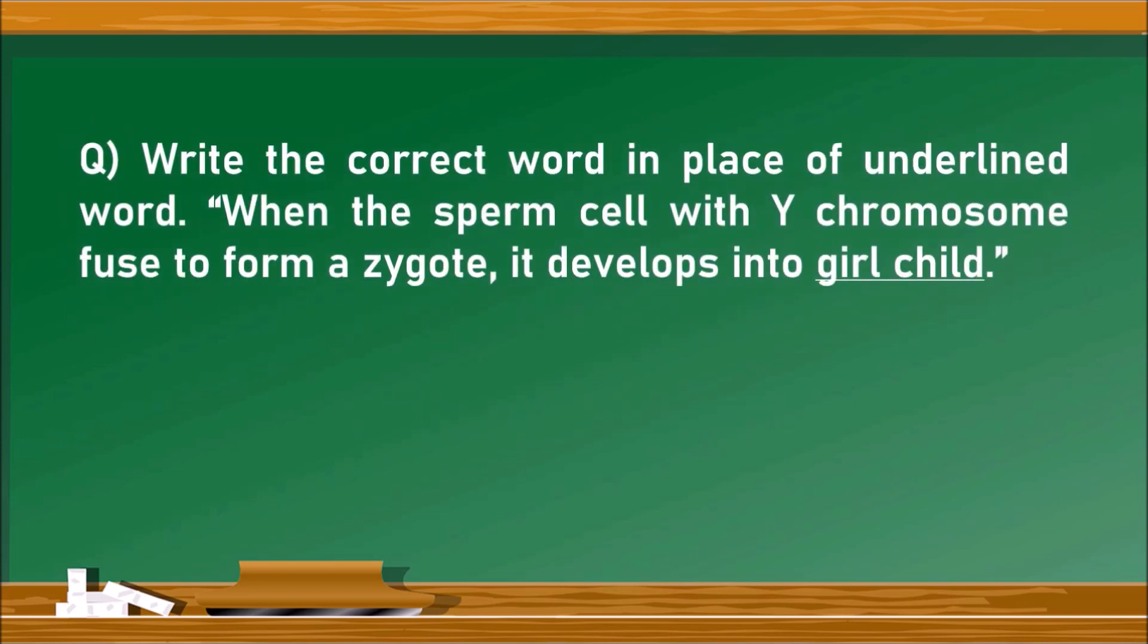Next question: Write the correct word in place of the underlined word. When the sperm cell with Y chromosome fuses with the egg cell to form a zygote, it develops into what kind of child? Here it is given as girl child, but the answer is boy child.